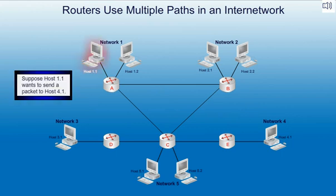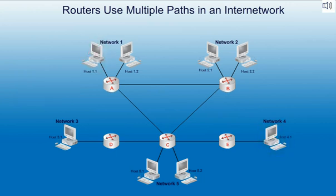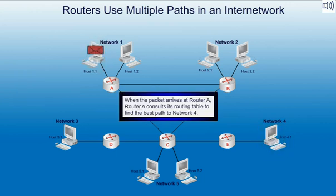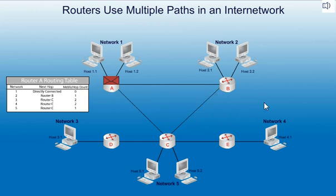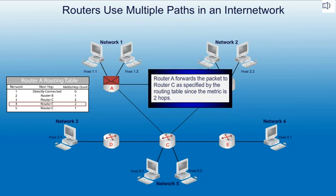Suppose host 1.1 wants to send a packet to host 4.1. When the packet arrives at router A, router A consults its routing table to find the best path to network 4. Router A forwards the packet to router C, as specified by the routing table, since the metric is two hops.